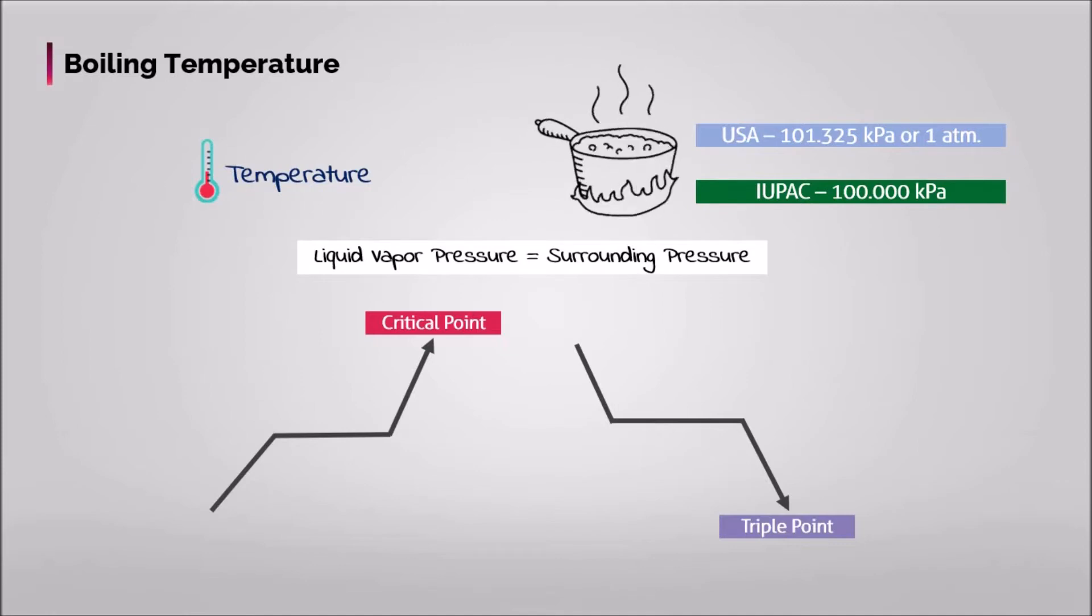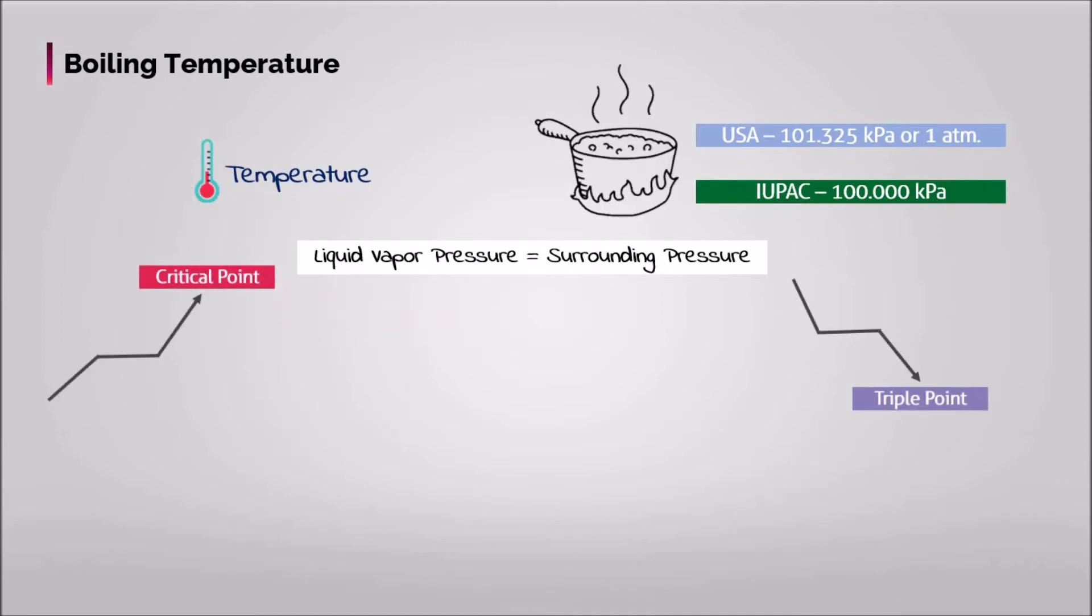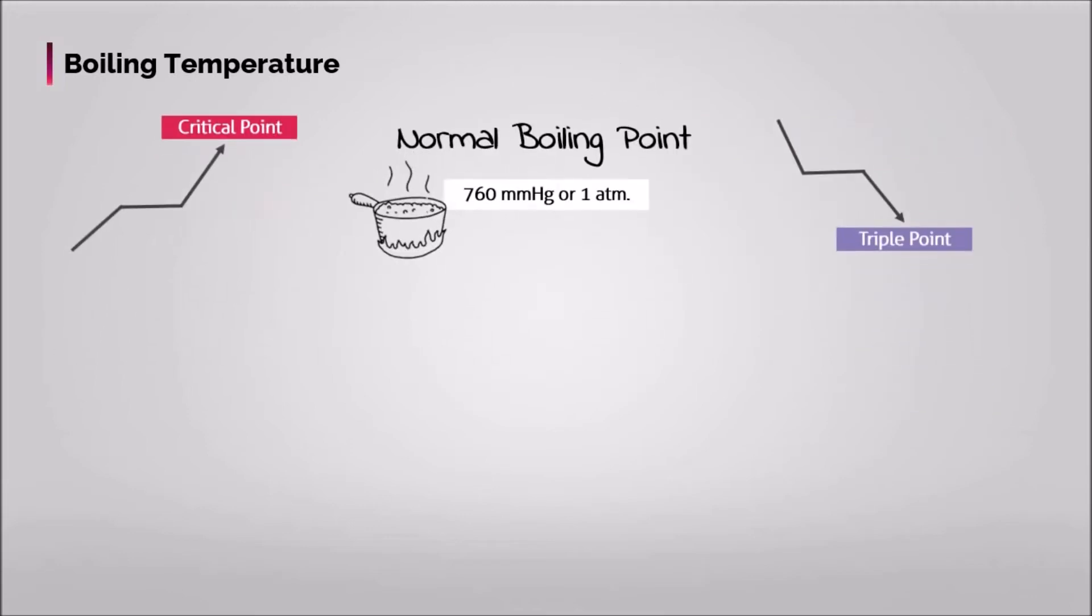When the vapor pressure of the liquid equals atmospheric pressure at standard sea level, 760 mm or 29.92 inches of mercury, one atmosphere, it is called normal boiling point of a liquid. At sea level, water boils at 100 degrees Celsius or 212 degrees Fahrenheit.